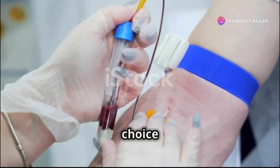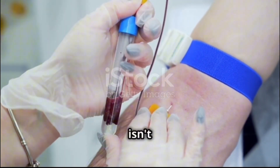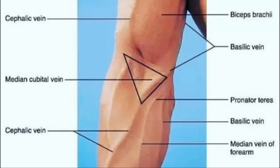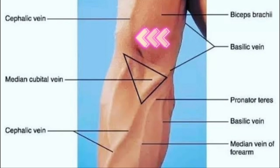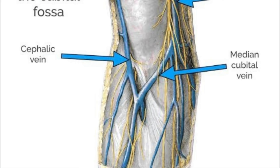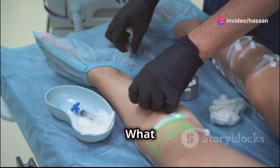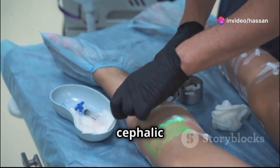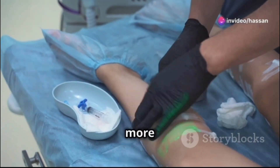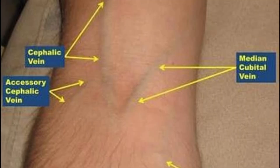What would be our second choice if the median cubital vein isn't accessible? The second choice would be the cephalic vein. The cephalic vein is on the lateral side of the arm towards the thumb, and it is often visible and easy to palpate, though sometimes it can be more difficult to locate in certain patients. It can be deeper or more difficult to anchor compared to the median cubital vein.